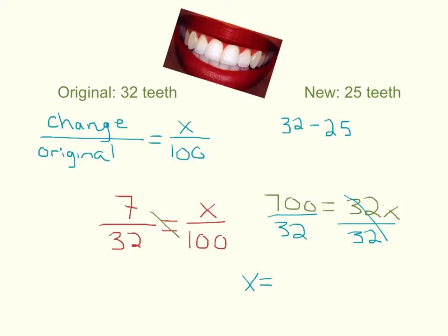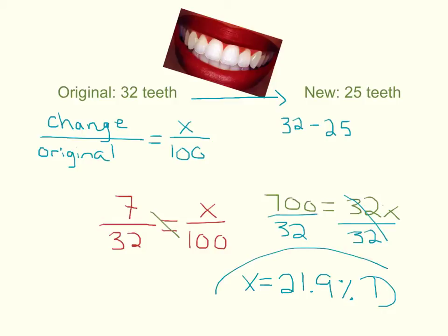Divide both sides by 32, which gives about 21.9. This is a percent, and since the number of teeth went down, it is a decrease — a 21.9% decrease in her teeth.